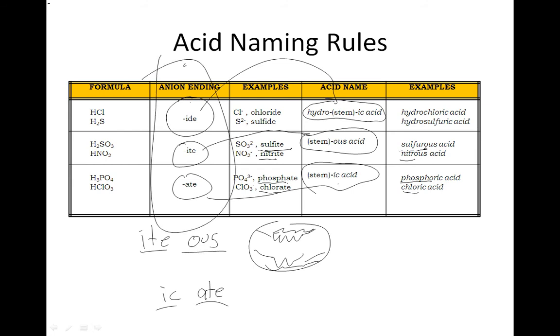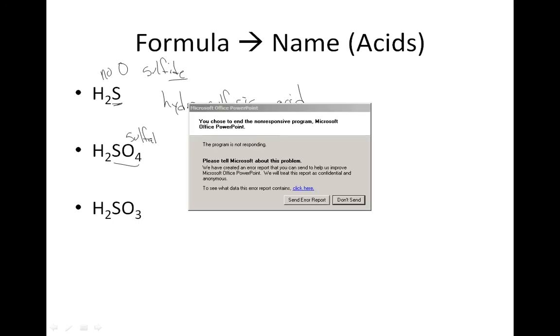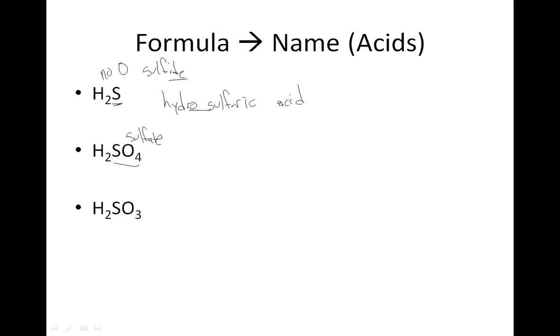Let's do some samples. Now that you have those things written down, you can use your table. So formula to the name, H2S. S has no oxygen, no oh, so it is sulfide. Ide is hydro stem ic acid. The stem for sulfide is sulfur. This is one word that doesn't look like it, but it is. Sulfide, hydrosulfuric acid. SO4, we're memorizing these. Hopefully we've got this as sulfate. And sulfate becomes ick, I ate it. Sulfuric acid. This one is sulfite. I memorized mine so well. Ite us, like gingivitis. Sulfurous acid.